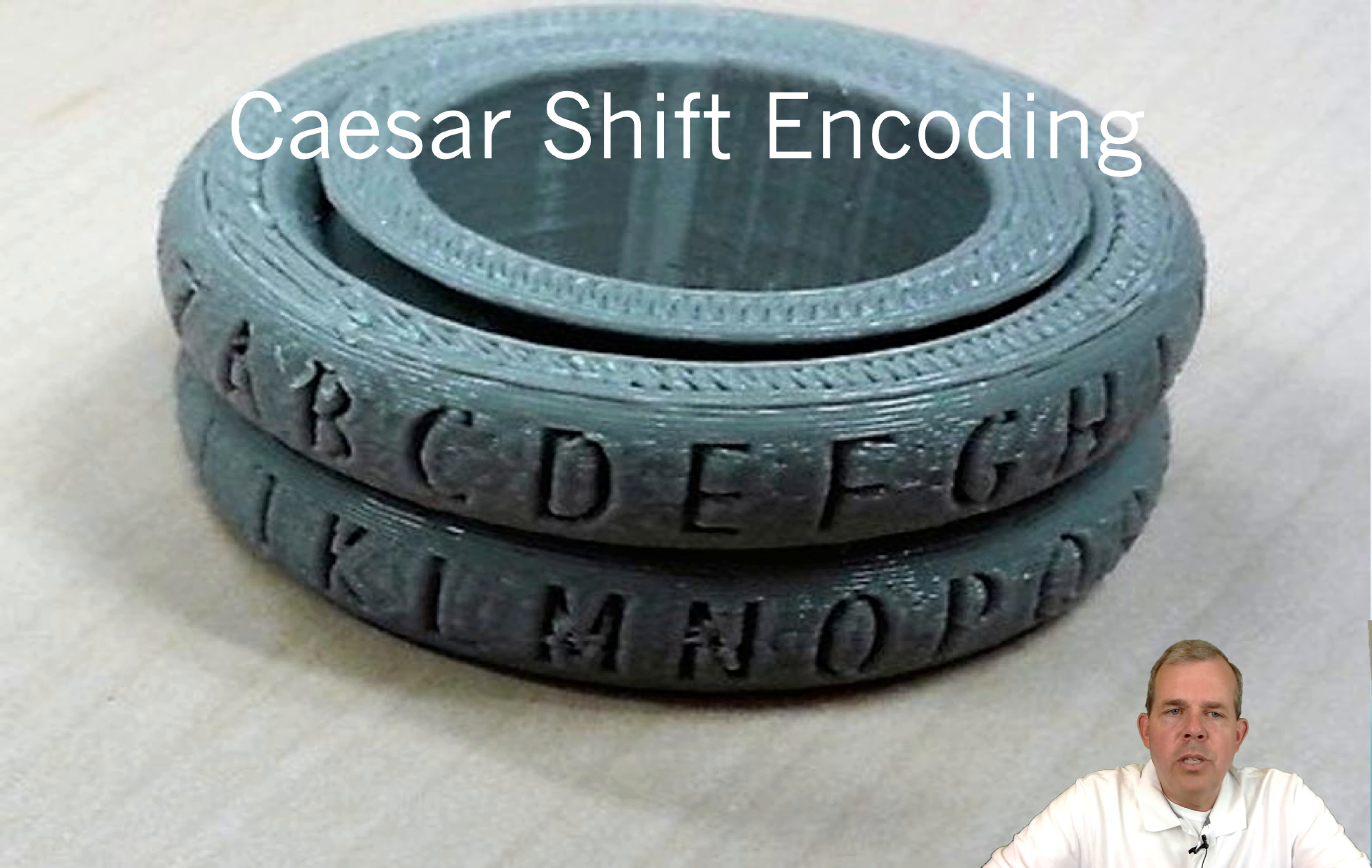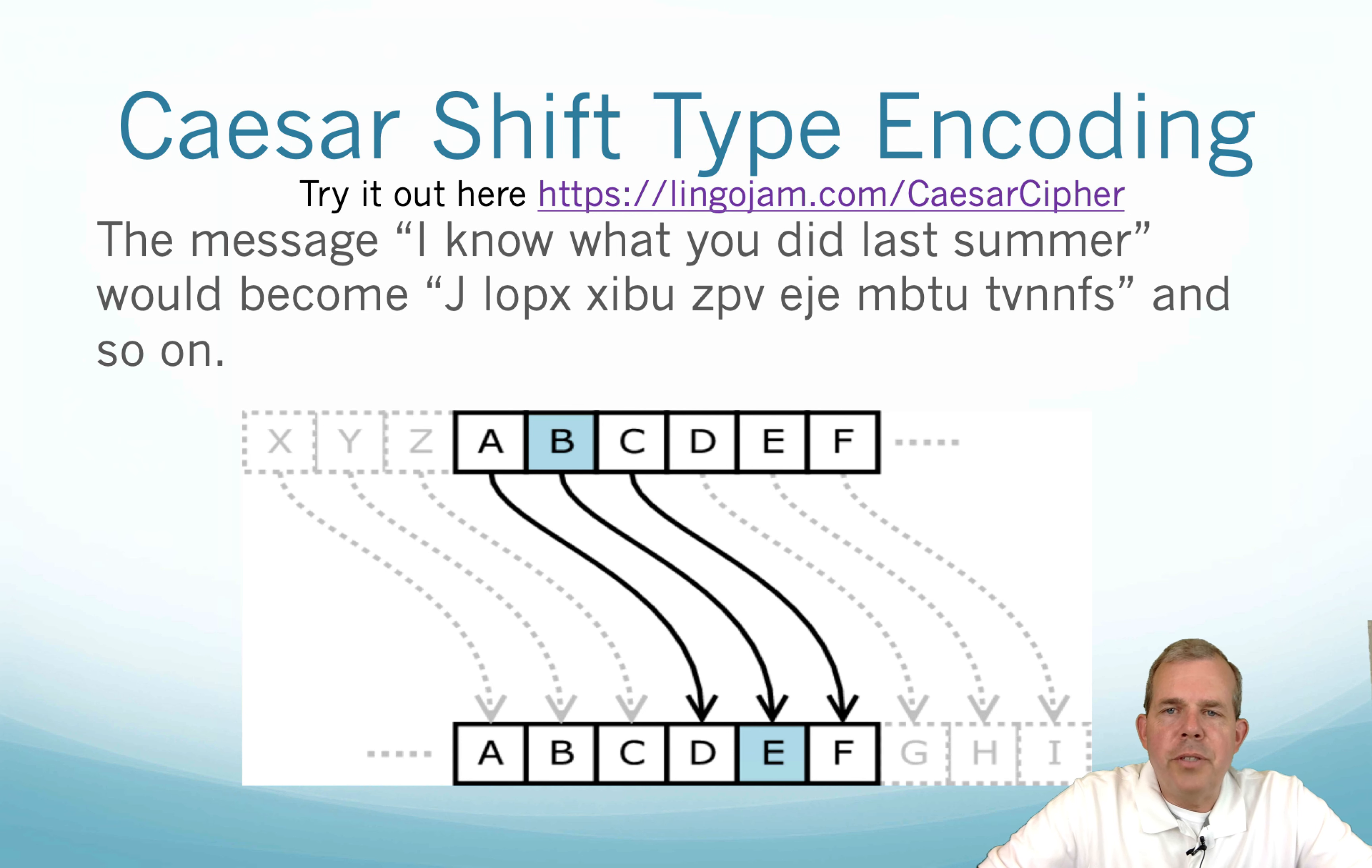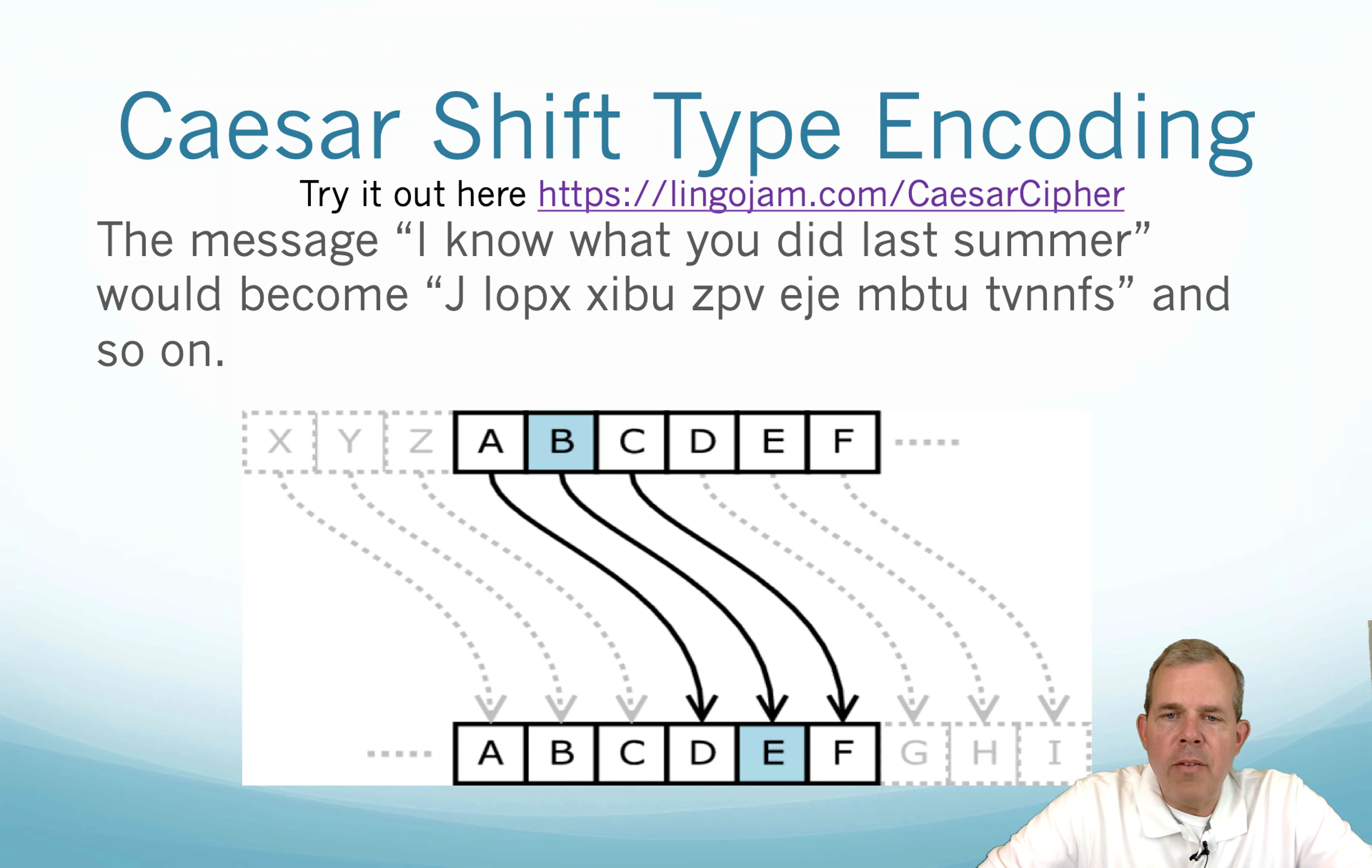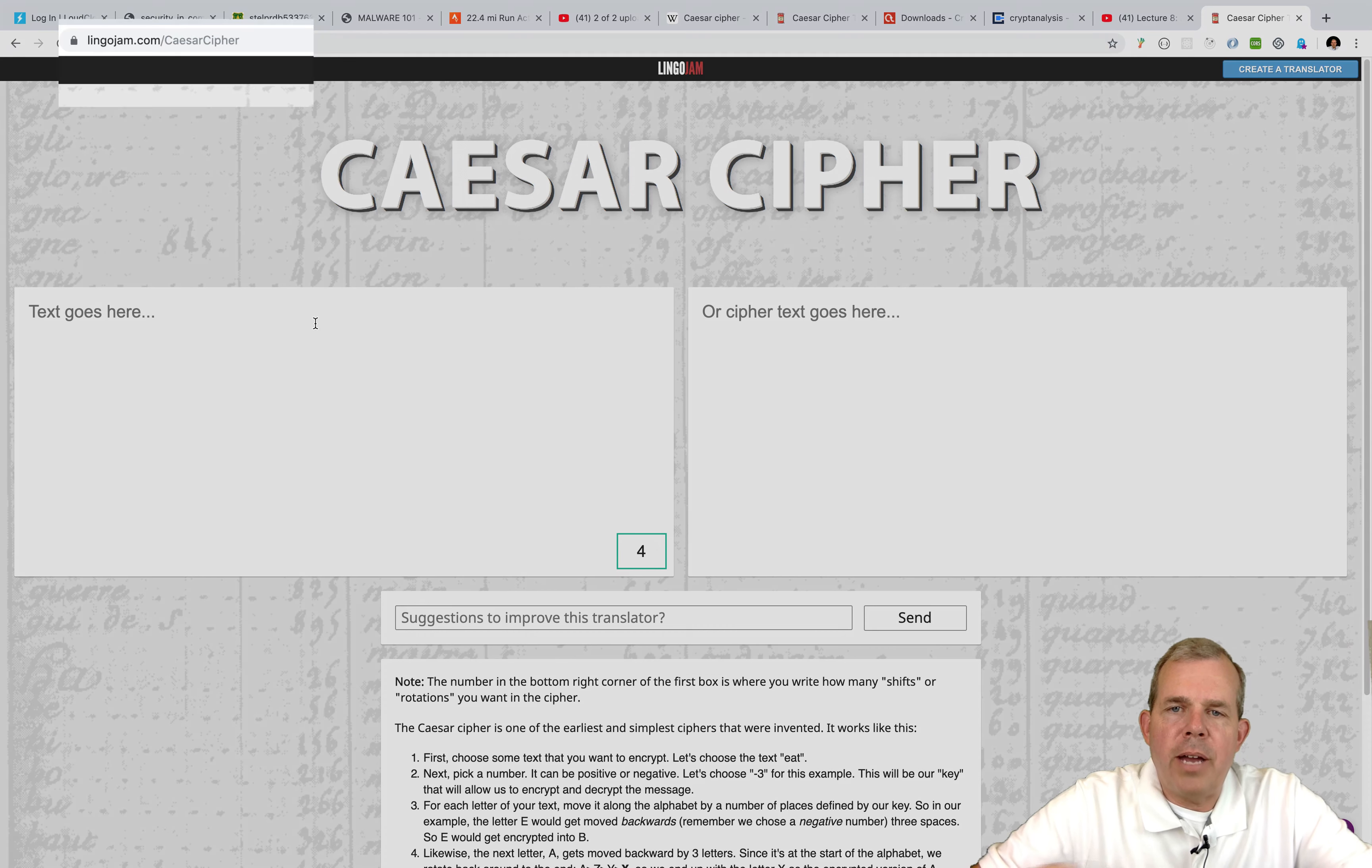So back in the ancient times, there were coding rings that were able to send and receive messages that were important for military. A Caesar shift is what they would call them. They're pretty simple. You've probably built these to communicate with your friends at some time in your life. You just take a letter and shift it one or two places to the right, and suddenly you have a key that can scramble your alphabet. They're pretty easy to figure out, actually.